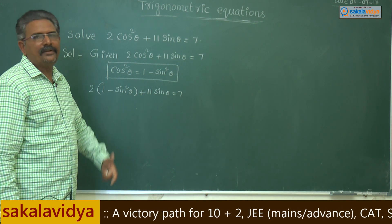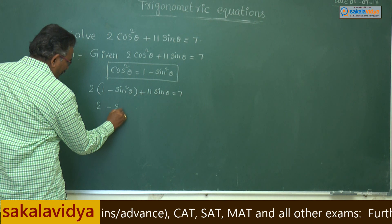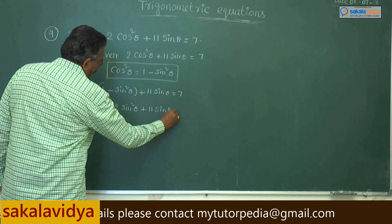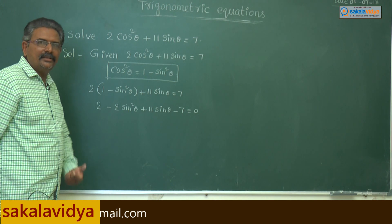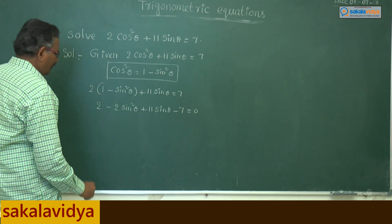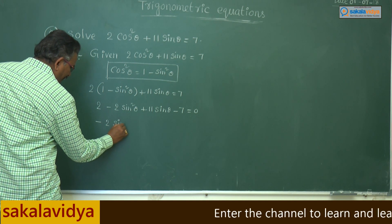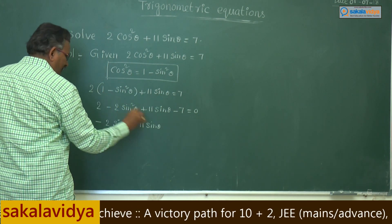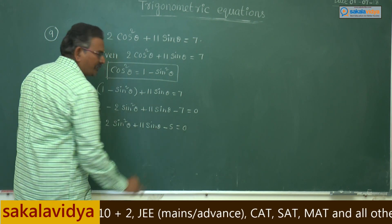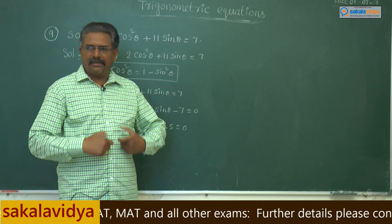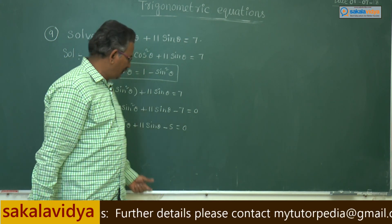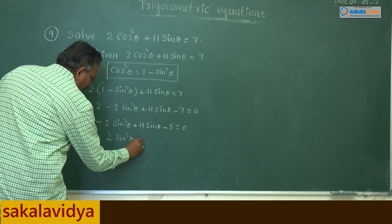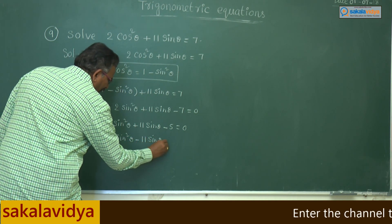Expanding and simplifying: 2 - 2sin²θ + 11sinθ = 7. Bringing 7 to the left side gives 2 - 2sin²θ + 11sinθ - 7 = 0, which simplifies to -2sin²θ + 11sinθ - 5 = 0. Multiplying both sides by -1, we get 2sin²θ - 11sinθ + 5 = 0, which is a quadratic equation in sinθ.